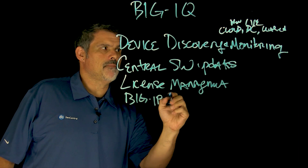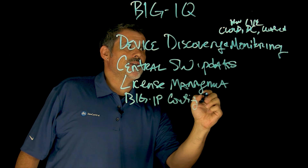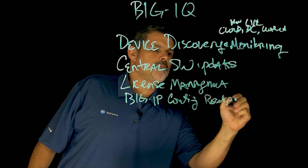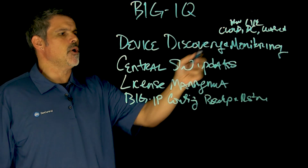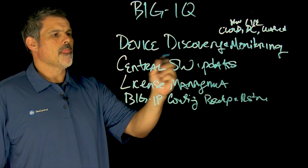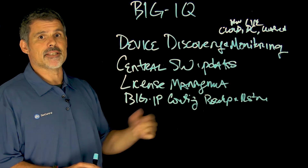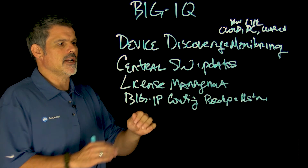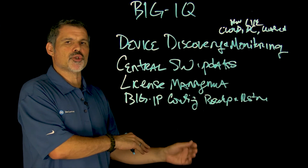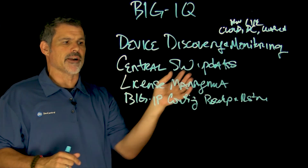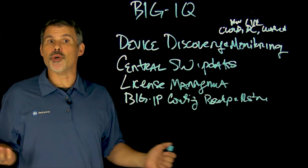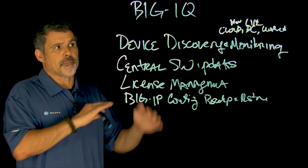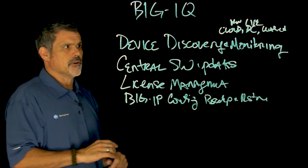You can do Big IP configuration backup and restore. Just like having various versions of Big IP software loaded on your Big IQ, you can also do backups and restores of the various configurations and save them onto Big IQ — taking snapshots of your various devices and managing them, even ones that might be on different versions.